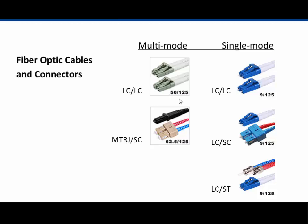You can see the 50/125 micron specification — the 50 identifies the diameter of the core and the 125 the outer cladding. Multi-mode fiber is 50/125, whereas single-mode LC connectors are 9/125 with a much smaller core. There is also an LC-SC fiber optic cable, with LC termination on one end and SC termination on the other, used for single-mode fiber optics. Another cable has LC on one end and ST connectors on the other. And another has MTRJ connectors on one end and SC connectors on the other.